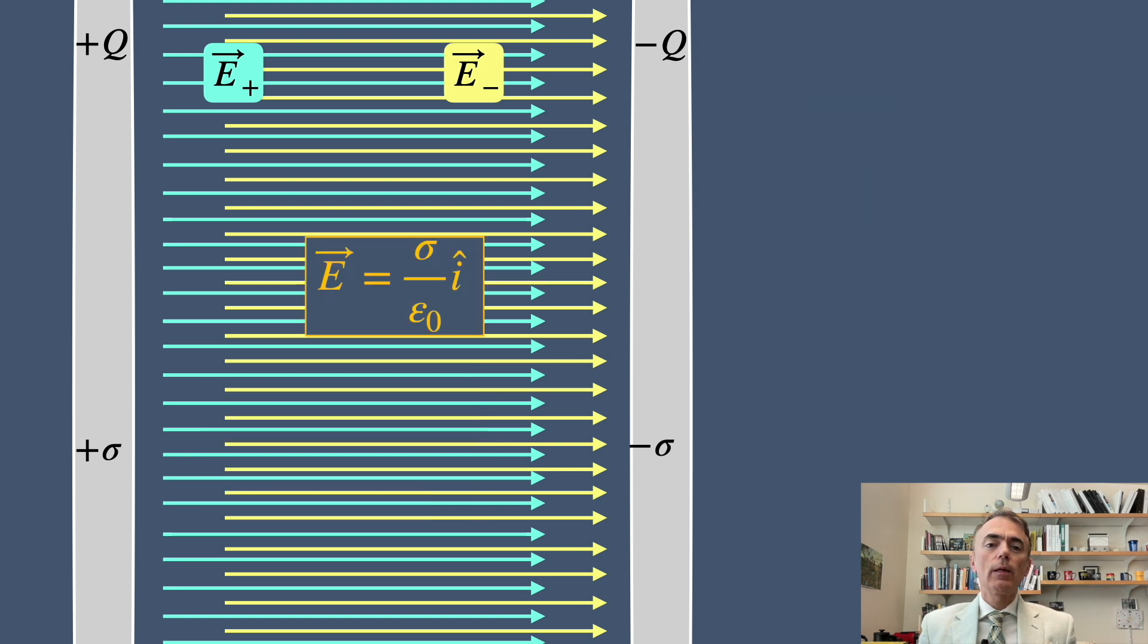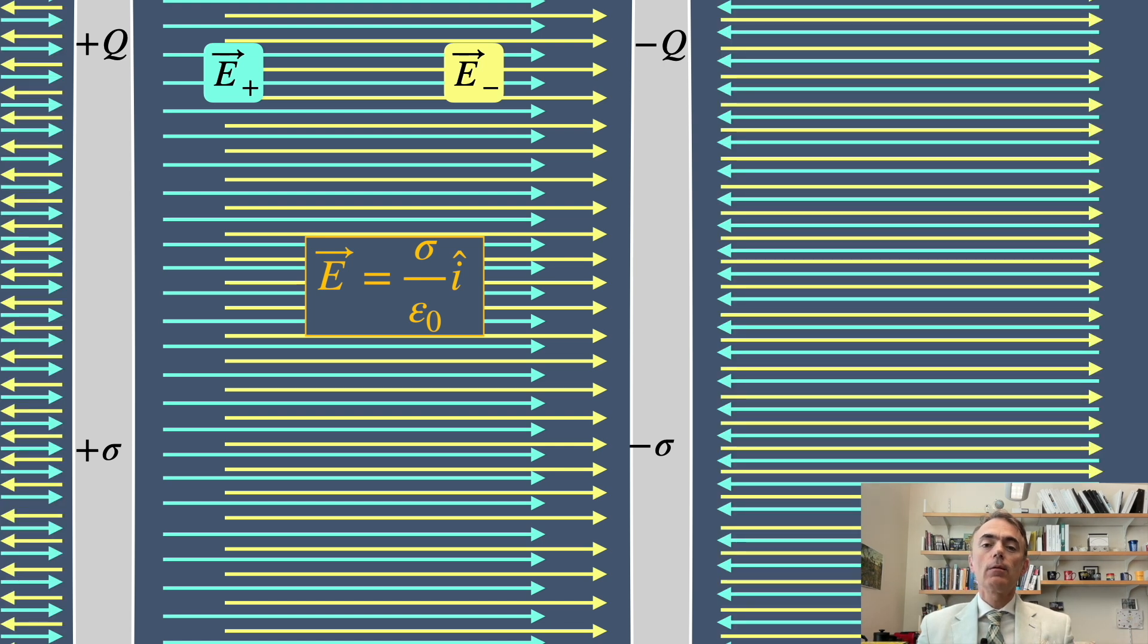Outside of the plates the electric field lines from each plate point in opposite directions and have the same magnitude so they cancel each other.